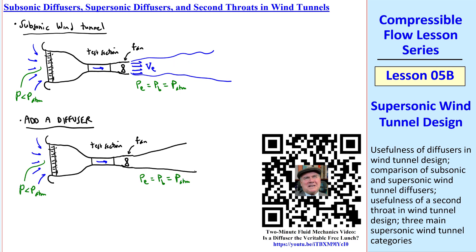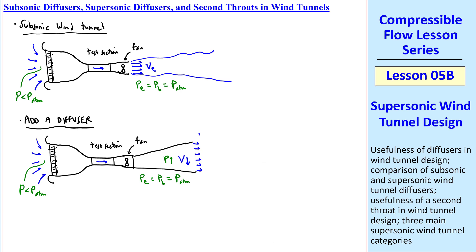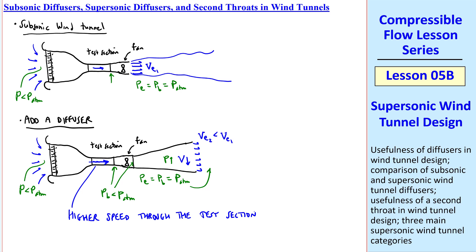Namely, we have a diverging duct downstream of the fan that slows down the flow. Recall that pressure goes up in this diffuser and speed goes down. We still have flow at some V_E — call it V_E2, compared to V_E1 originally. So V_E2 is less than V_E1, but pressure is still atmospheric at the exit. Since pressure is rising up to atmospheric here, the pressure upstream has to be lower than atmospheric, and this creates extra suction that makes the test section speed larger.